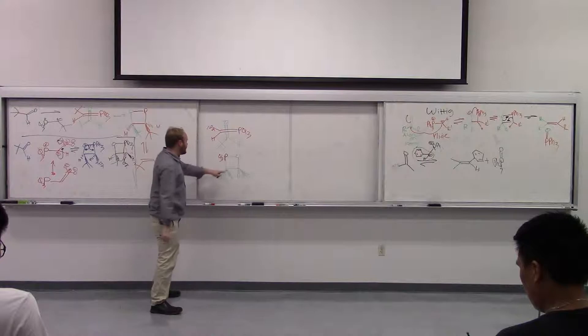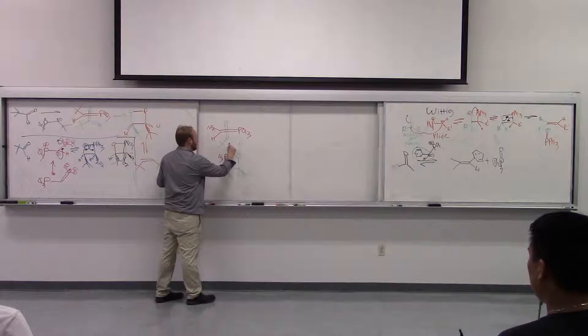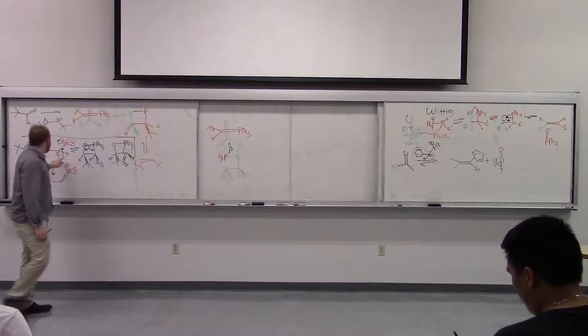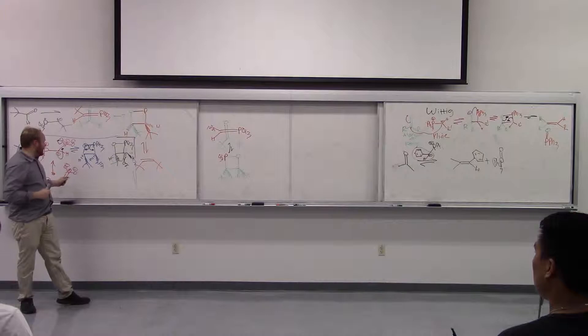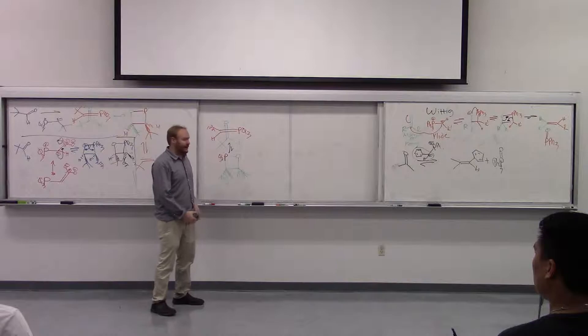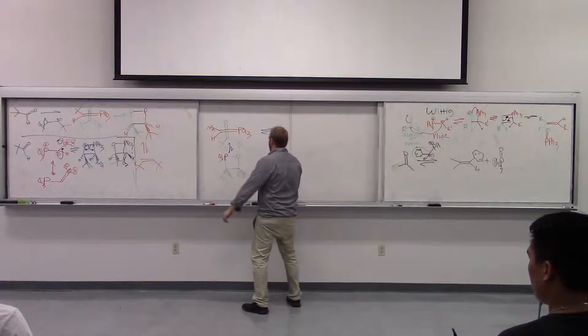So what this means is, because this is less stable, and because this is an electron withdrawing group, it can go back. And the reason it can go back is because this negative charge on this ylide next to the electron withdrawing group is much more stabilized than with an electron donating group. So whereas with an electron donating group, you can't go back. With an electron withdrawing group, the minus charge on the ylide is more stabilized, so you can go back. And then eventually, it will flip.